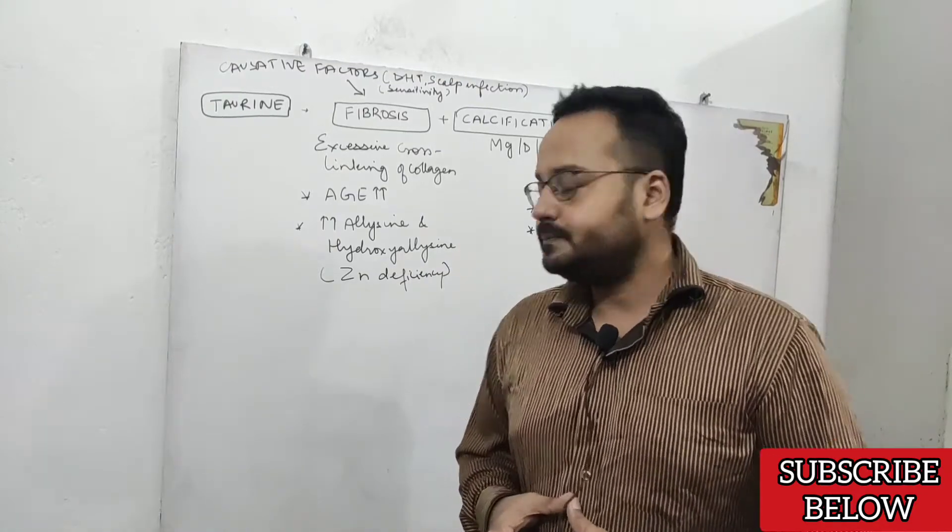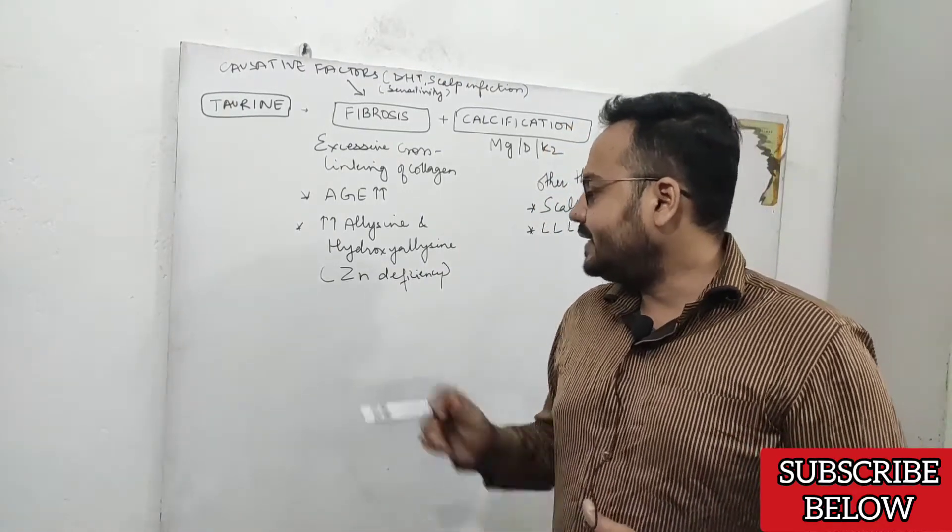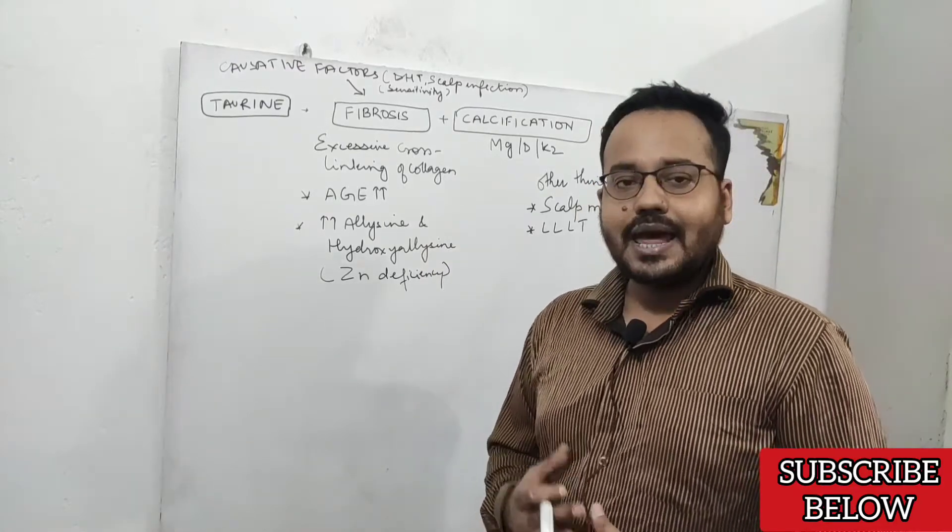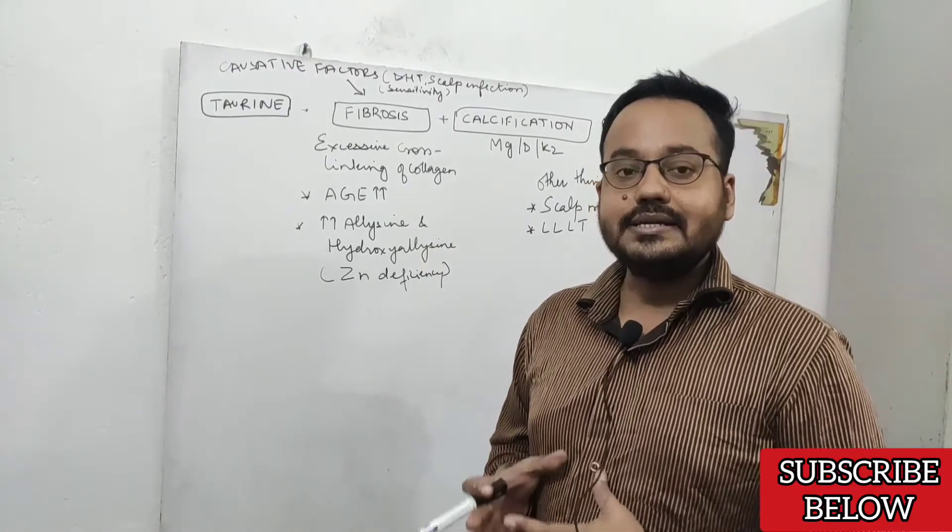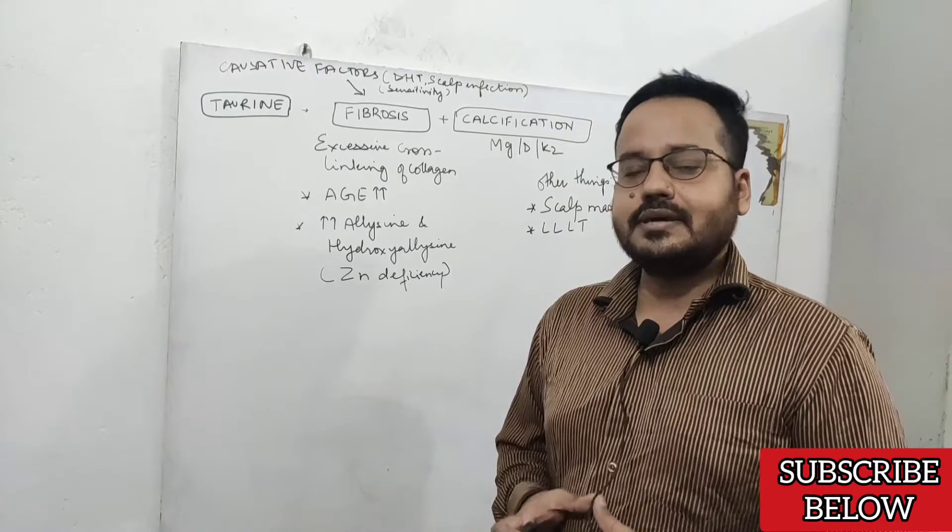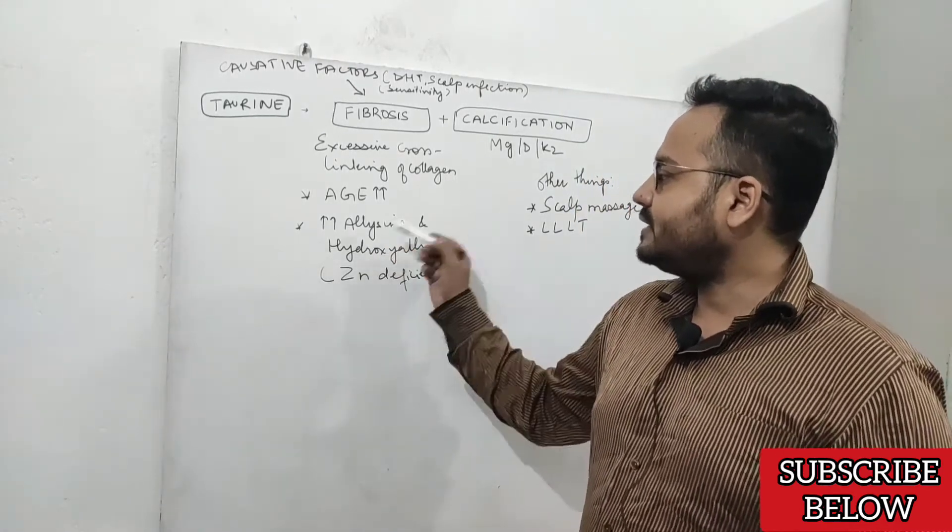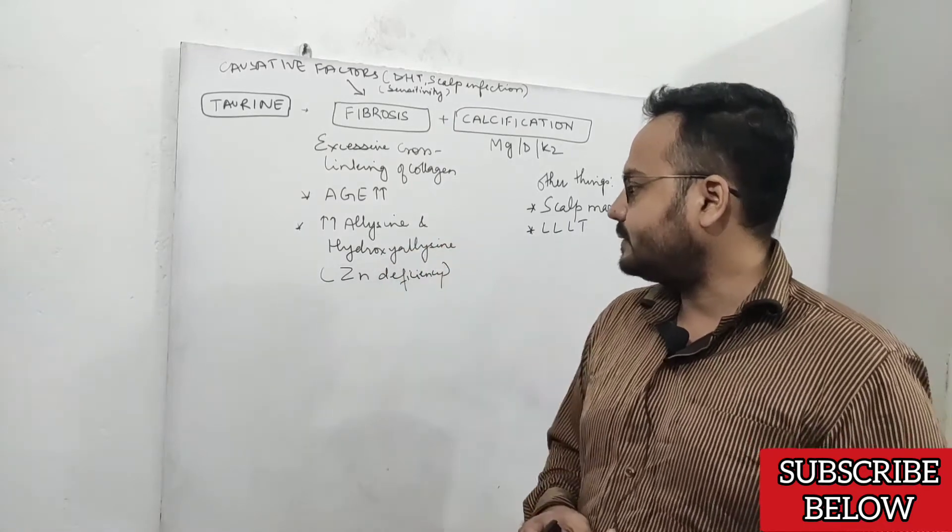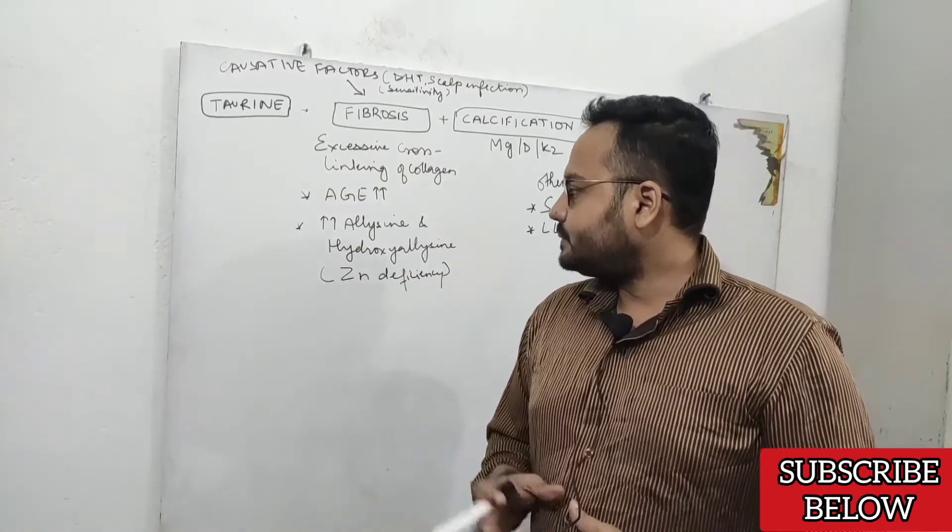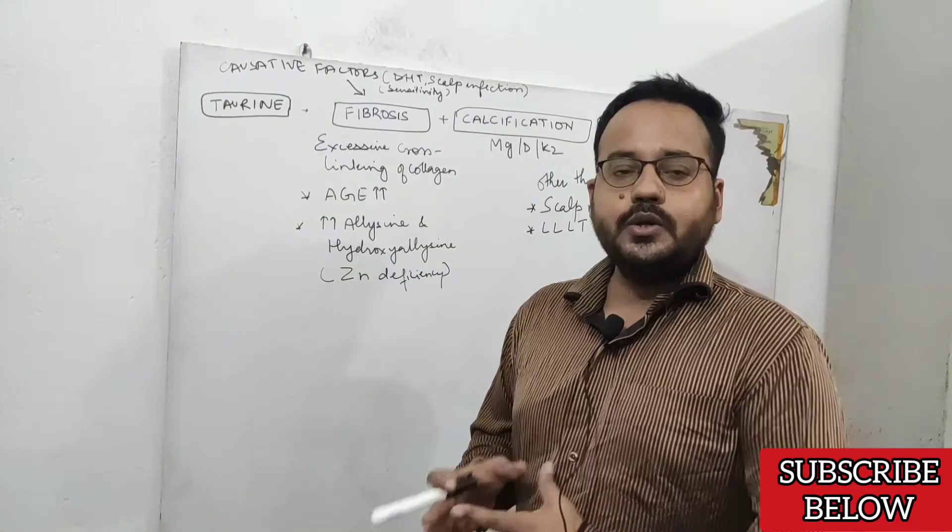Due to zinc deficiency, the likelihood of fibrosis, tight scalp, and decreased scalp circulation can increase. Zinc deficiency can result in increased activity of allysine and hydroxylysine, which are part of the amino acid lysine that takes part in collagen formation.